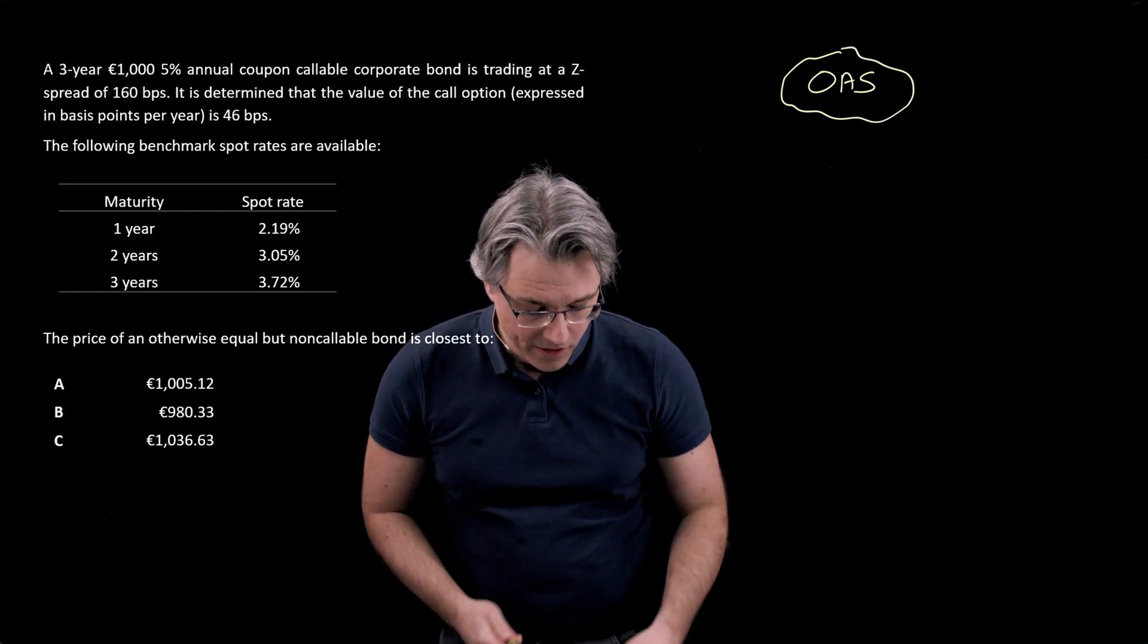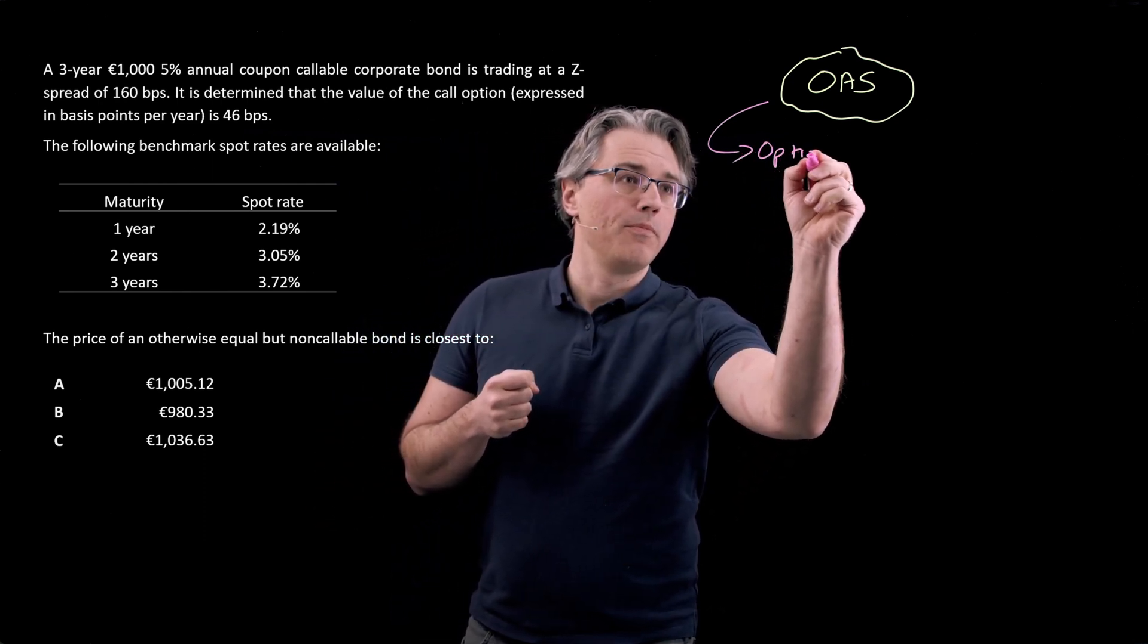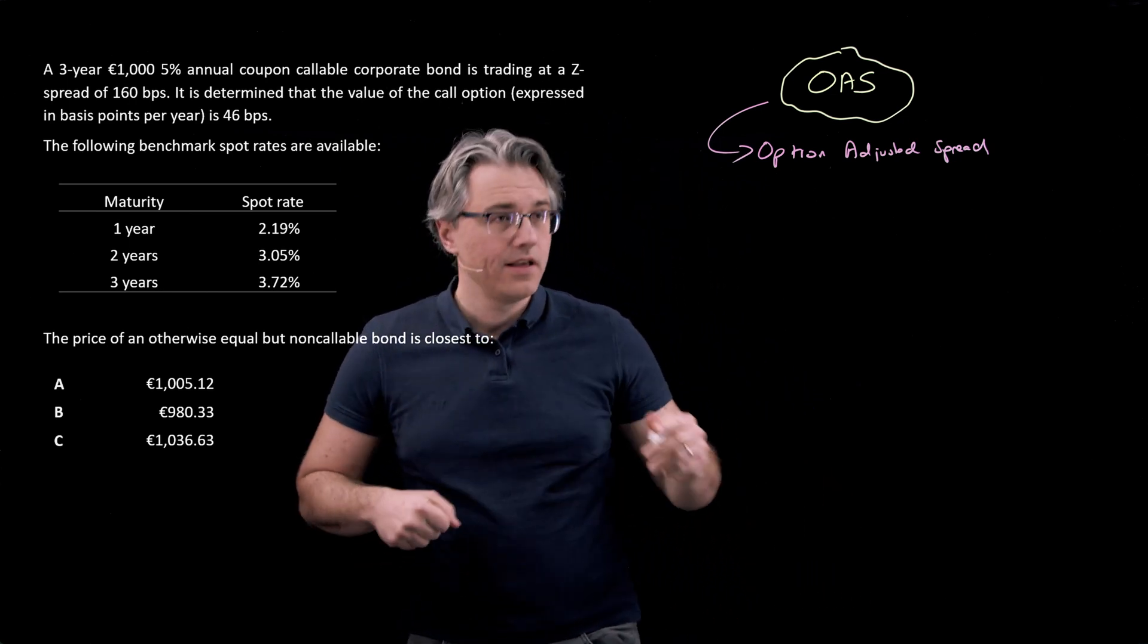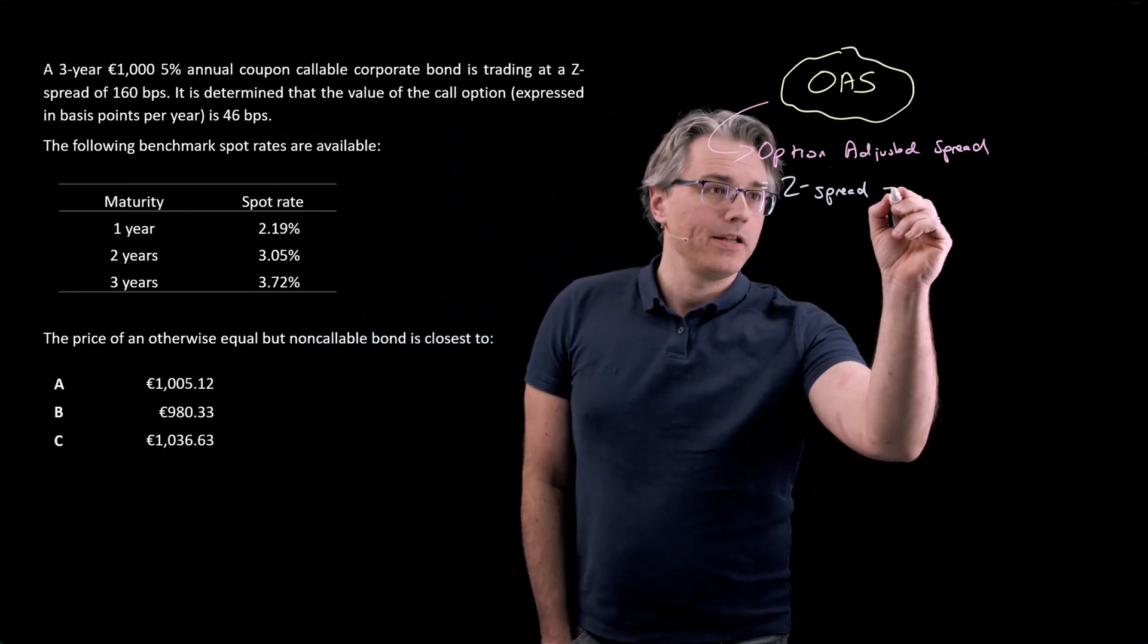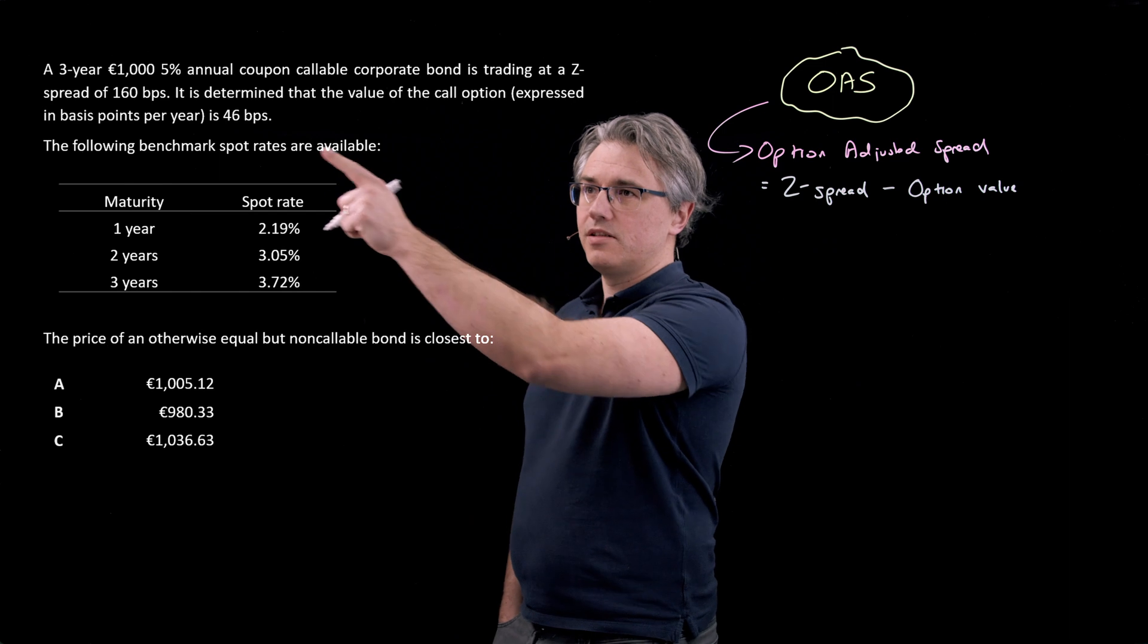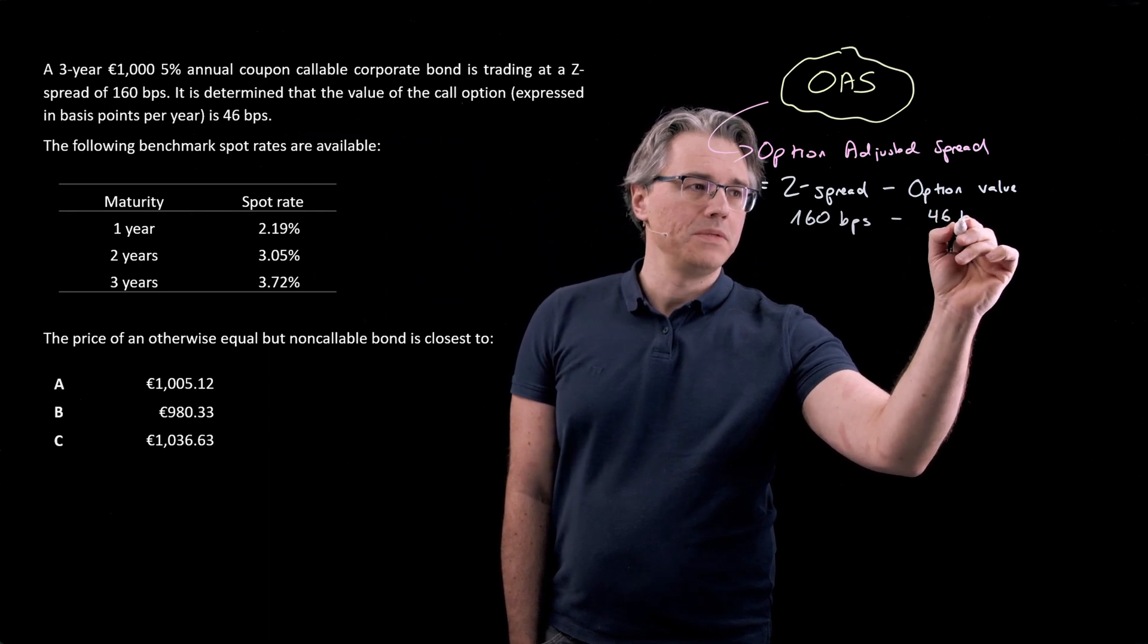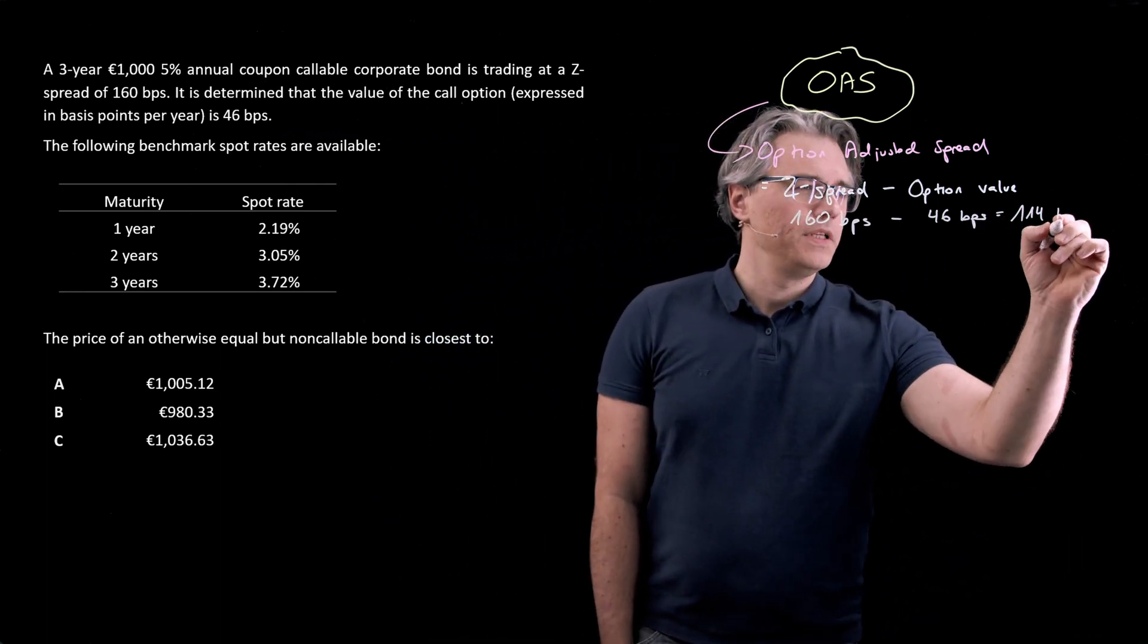For that you're going to need the OAS or as the full name is the option-adjusted spread. The option-adjusted spread is going to be computed as the Z-spread, something we already did in the previous question, minus option value. Option value here is expressed in basis points at 46 basis points. So essentially we're going to take 160 for the Z-spread minus 46 basis points for option value, thus arriving at a figure of 114 basis points.